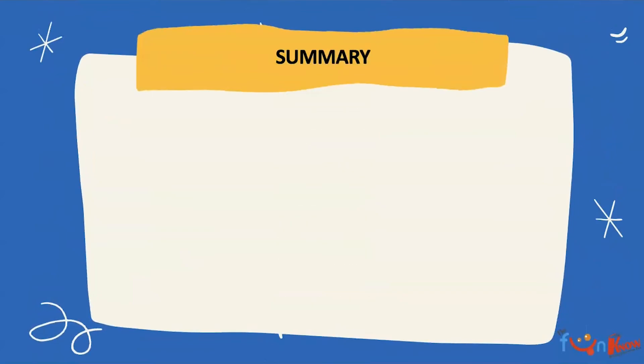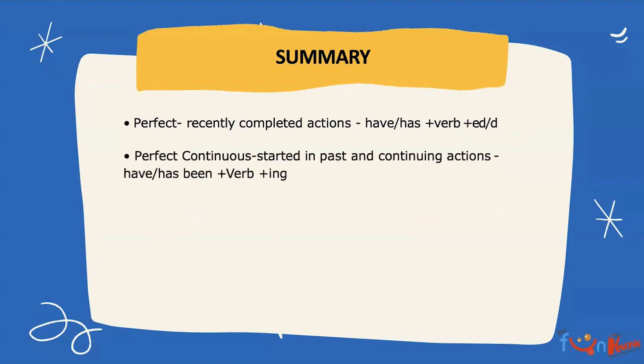Let's summarize today's video. We learned in perfect tense that recently completed actions are described. And how do we make a perfect tense? We use has or have plus the verb plus ed or d. In perfect continuous tense, it is started in the past and shows continuing actions. And how do we construct it? With have or has been plus the verb plus ing.